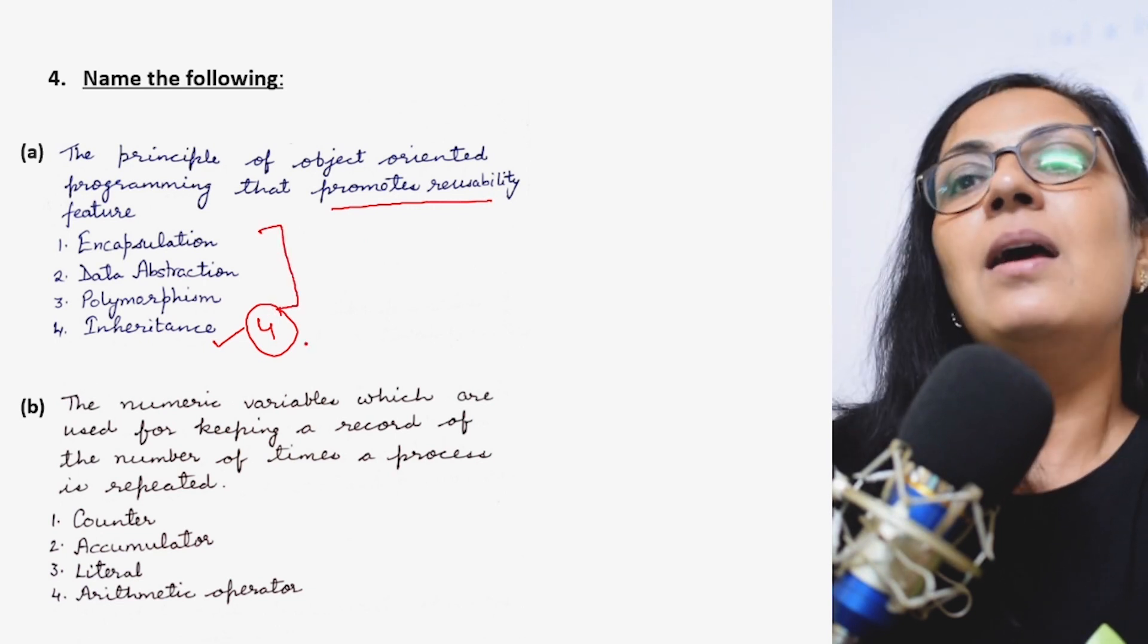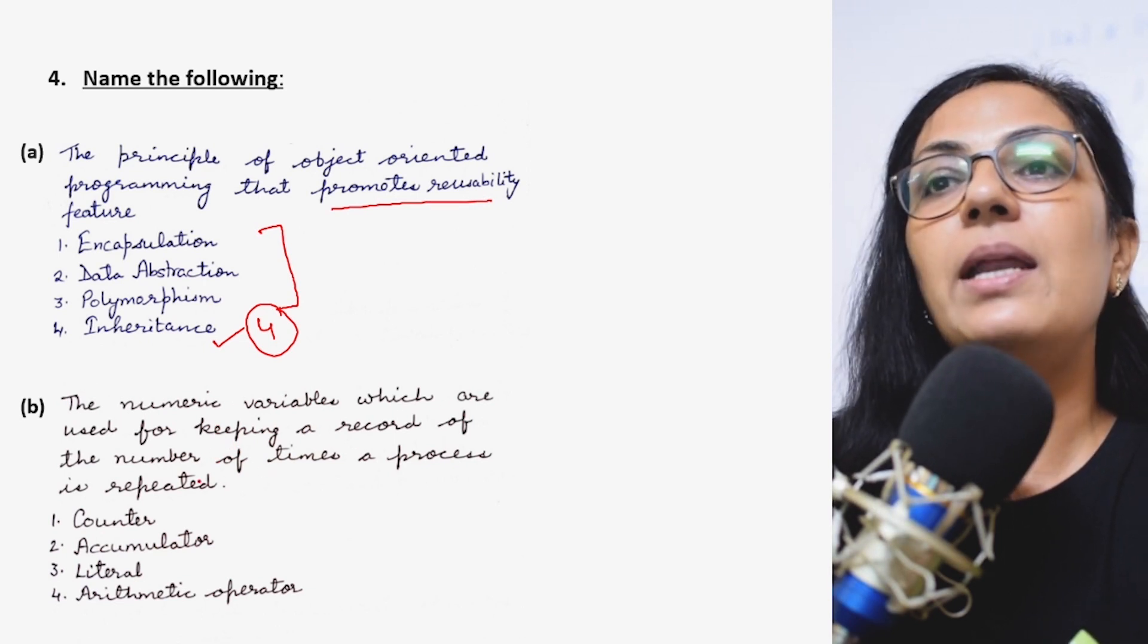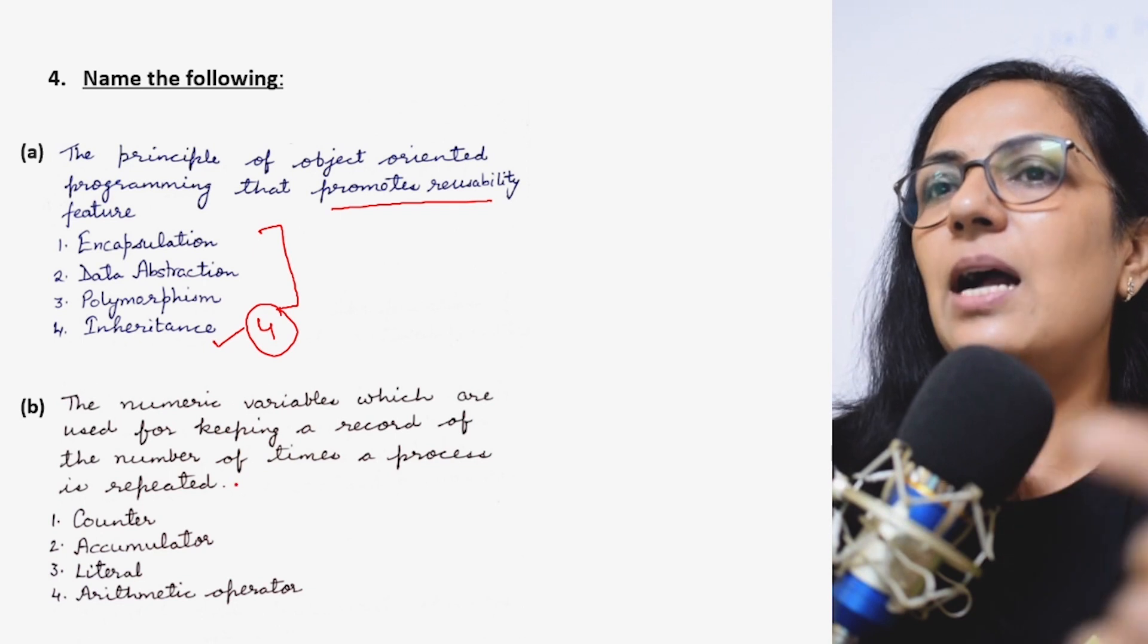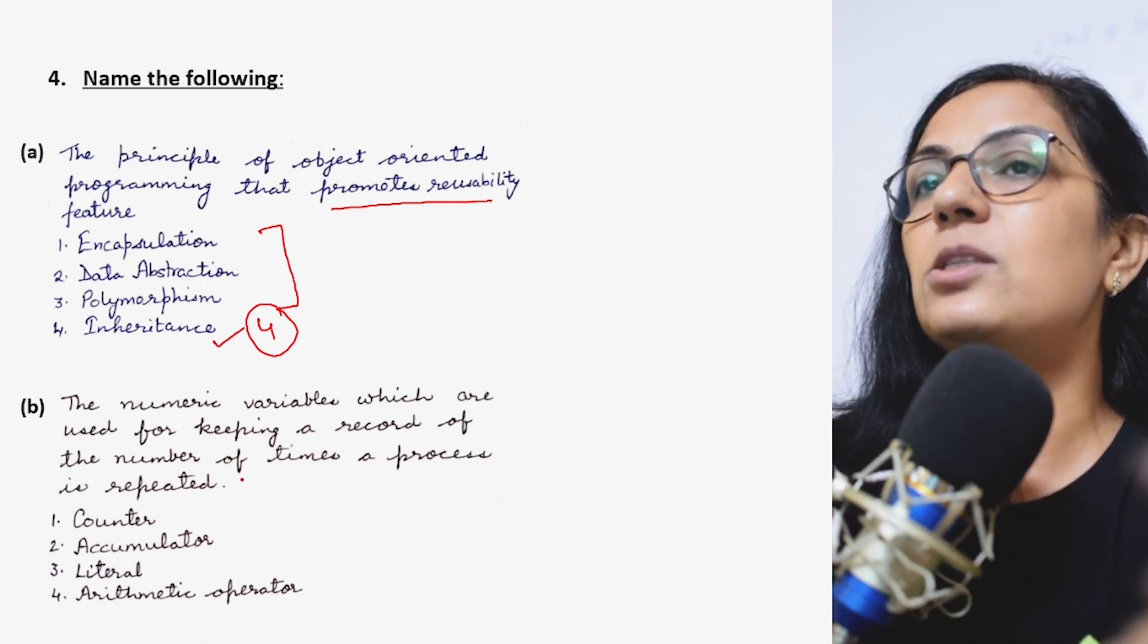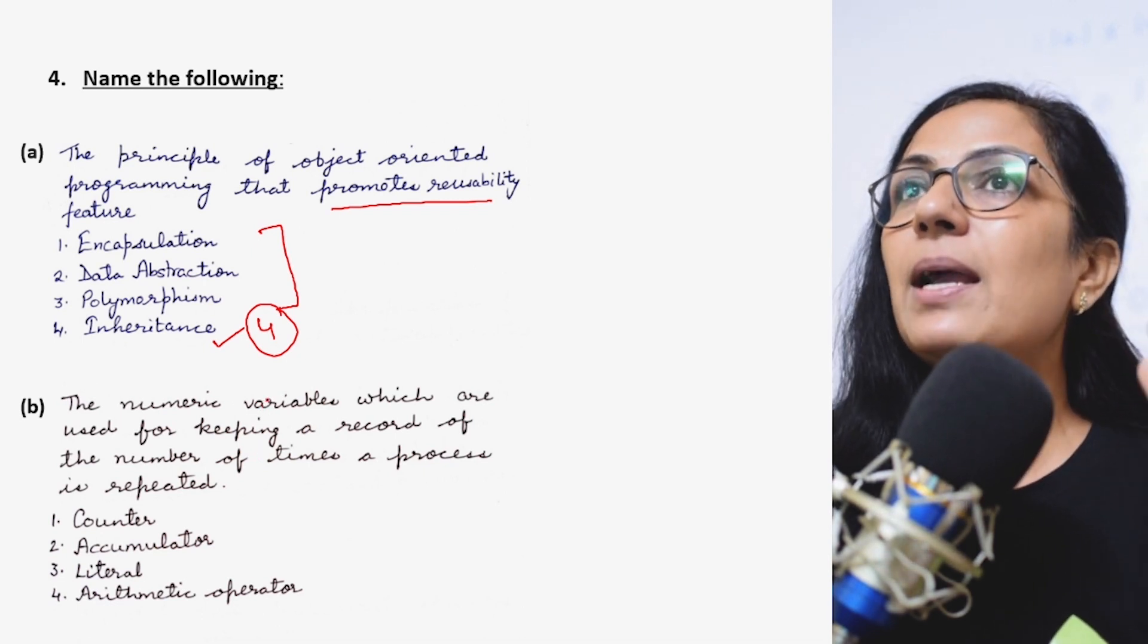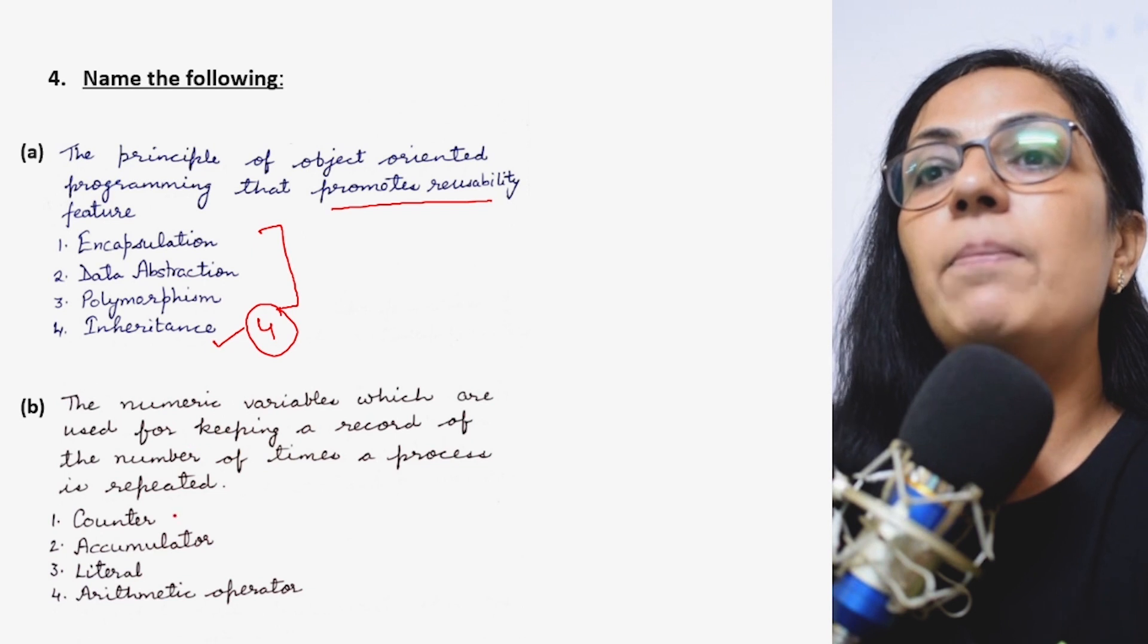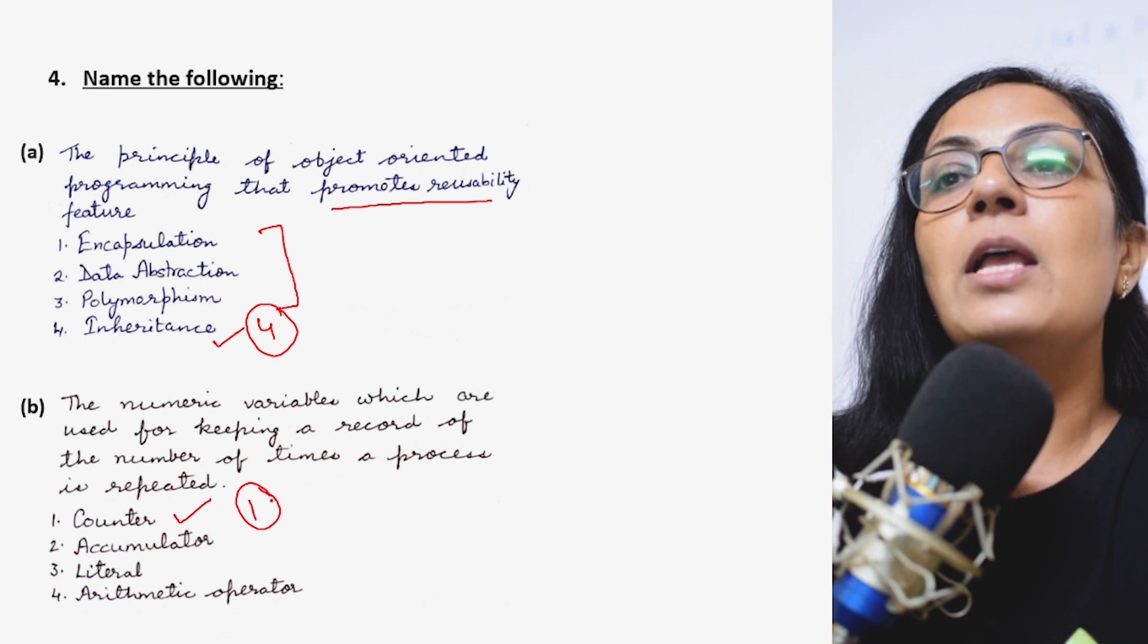The numeric variable which is used for keeping a record of the number of times the process is repeated. When we do number programs we say take a counter, take an accumulator, take a looping variable, store this. So the variable in which you are keeping a track how many times a particular process is repeated or performed, that variable, it has to be a numeric variable and that is known as counter.